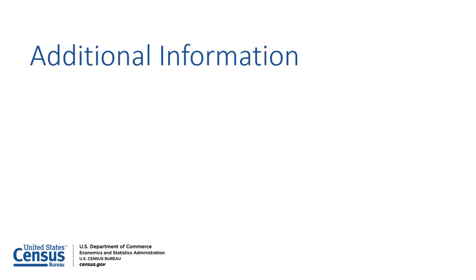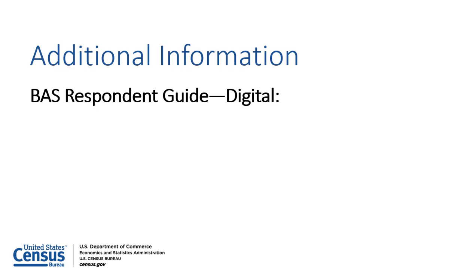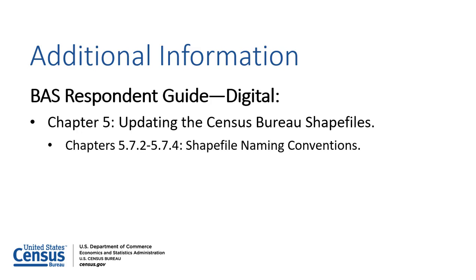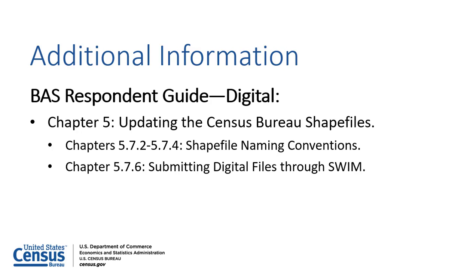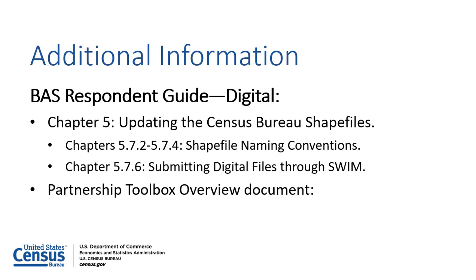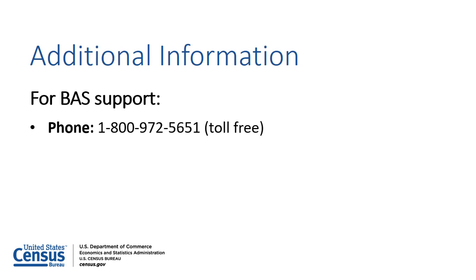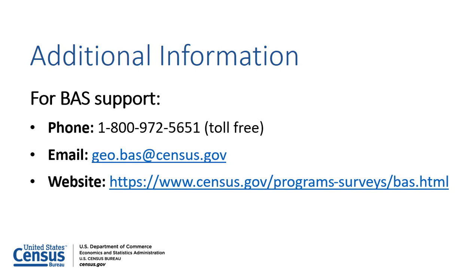For assistance creating a digital BAS submission, refer to the Digital Responding Guide, which is available on the BAS website. Chapter 5, Sections 5.7.2–5.7.4 contain a list of naming conventions for all change file types, and Section 5.7.6 lists step-by-step instructions for submitting digital files through SWMM. The Partnership Toolbox Overview document, included with the Toolbox download, provides step-by-step instructions for using the Export Submission Files Tool. For BAS support, please contact the Census Bureau by phone toll-free at 1-800-972-5651 or by email at geo.bass@census.gov. Participants may also refer to the BAS website for resources.